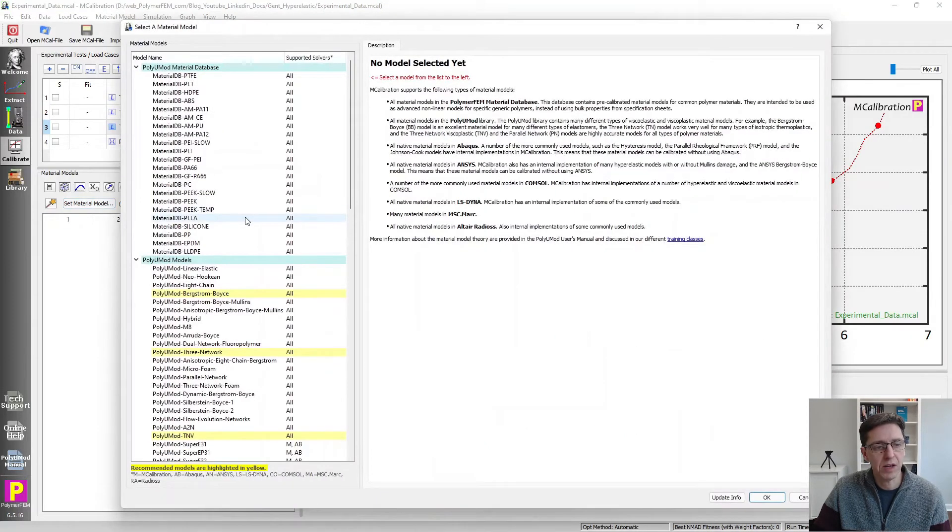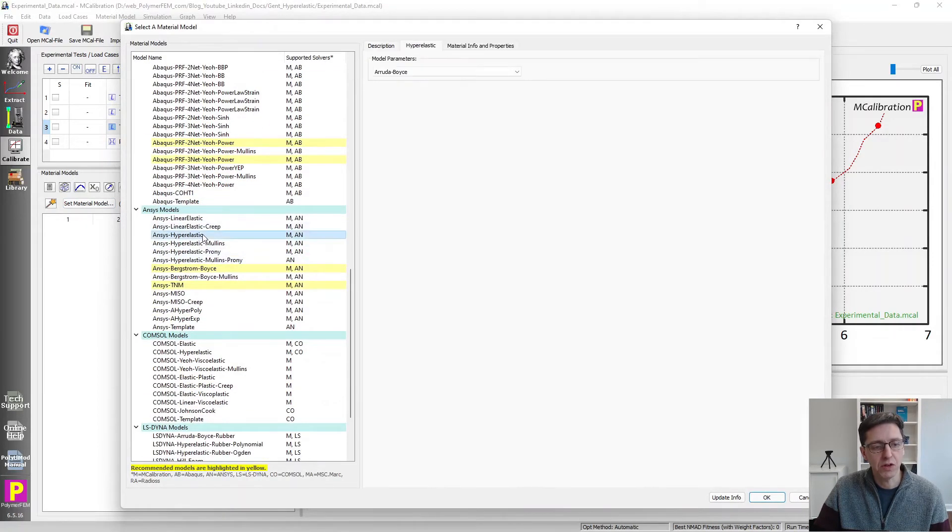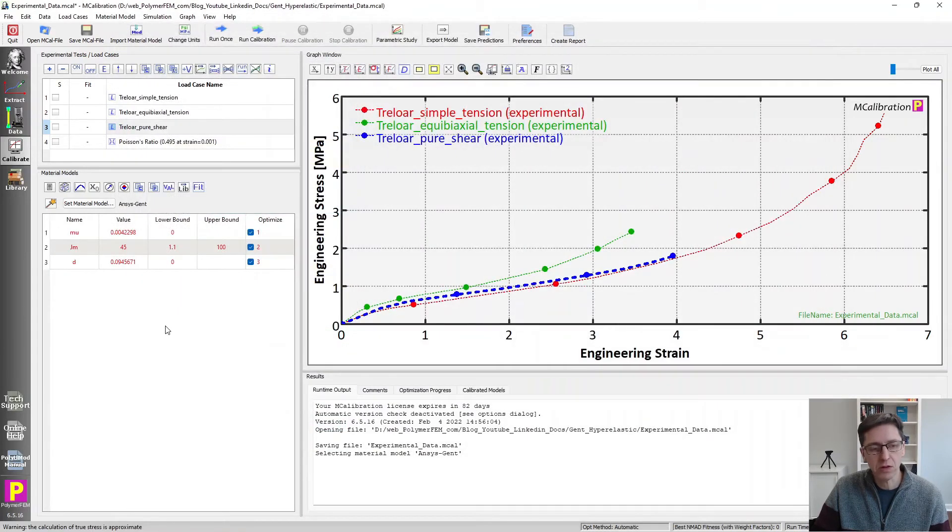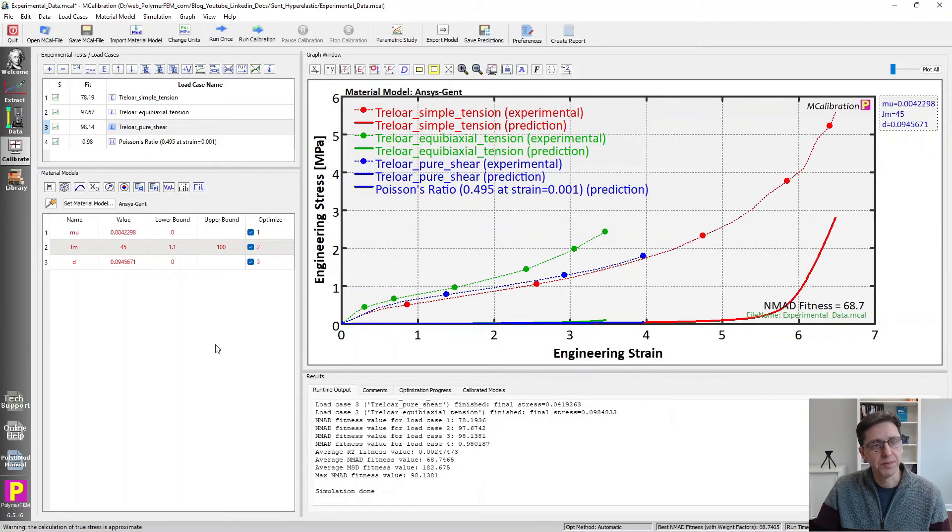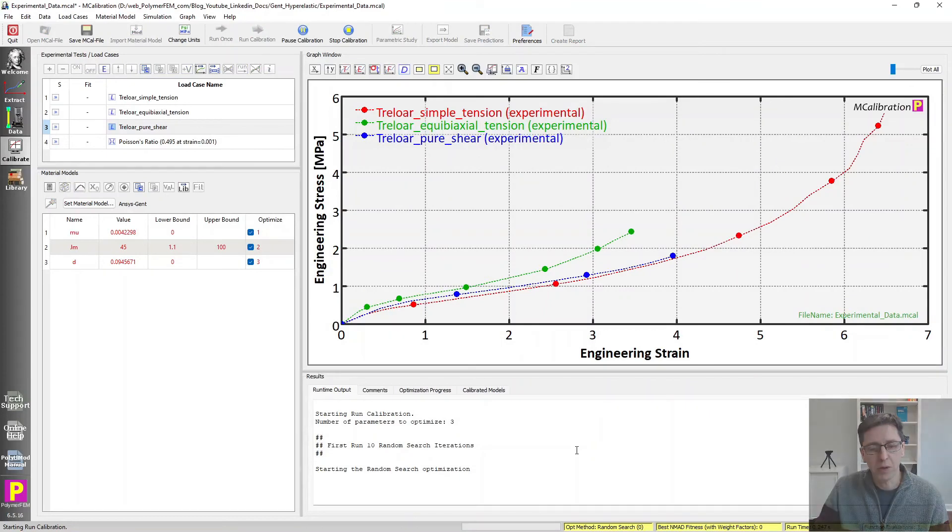And I'm just going to select the Gent model from the ANSYS version of it. Go here, and I just pick Gent. There's also a COMSOL version of it that works exactly the same. So I selected it here. I run once, you can see that this is initial guess, which isn't particularly good. I'm going to then just calibrate this model.